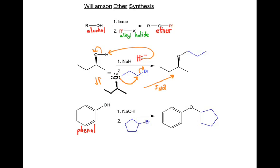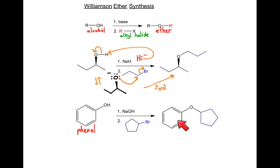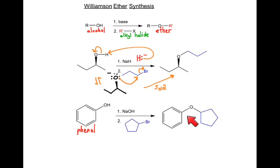The same reaction applies here: sodium hydroxide deprotonates the phenol's O–H to form a phenoxide anion with a negative charge. That phenoxide will do an SN2 attack to kick out the bromine, forming a new bond from the oxygen to the carbon that was connected to the halogen. And here is the product we'd see.